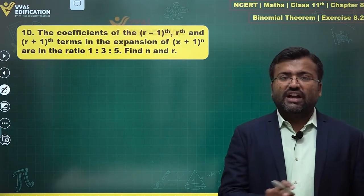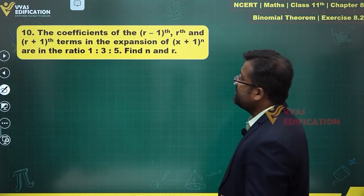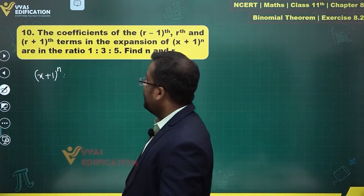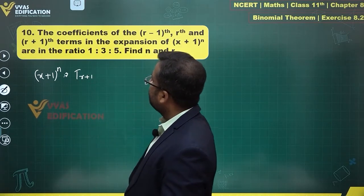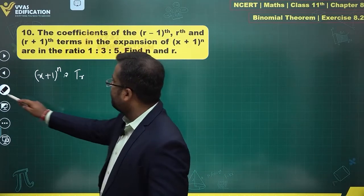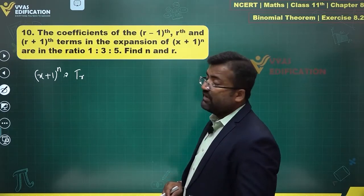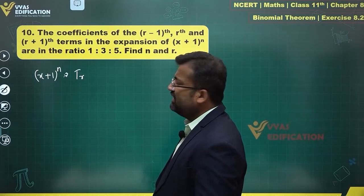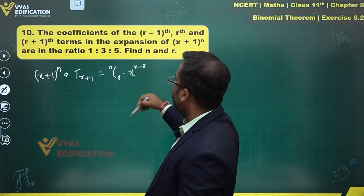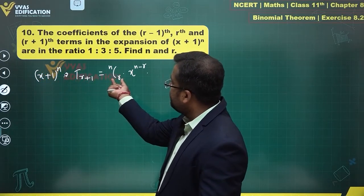There's some calculation involved but no difficult concept. This is a JEE Main type question. We are concerned with (x+1)^n and the general term T(r+1). The general term is T(r+1) = nCr * x^(n-r) * 1^r. Since 1^r = 1, the coefficient of the (r+1)th term is simply nCr.